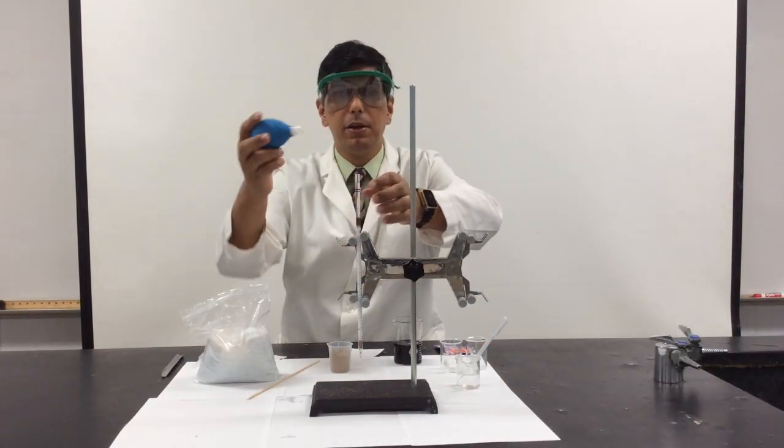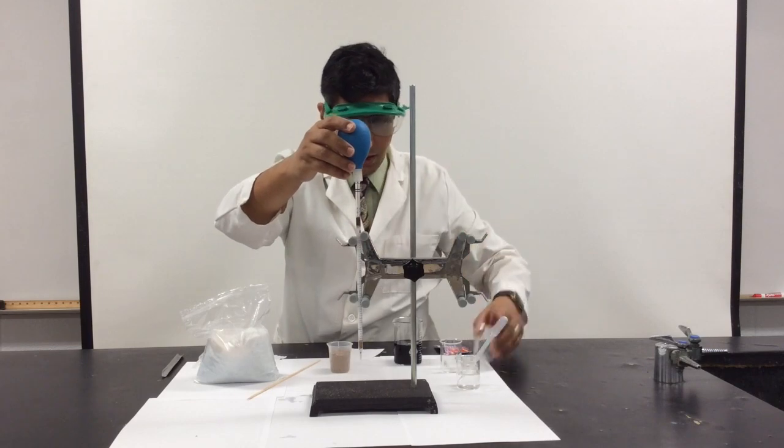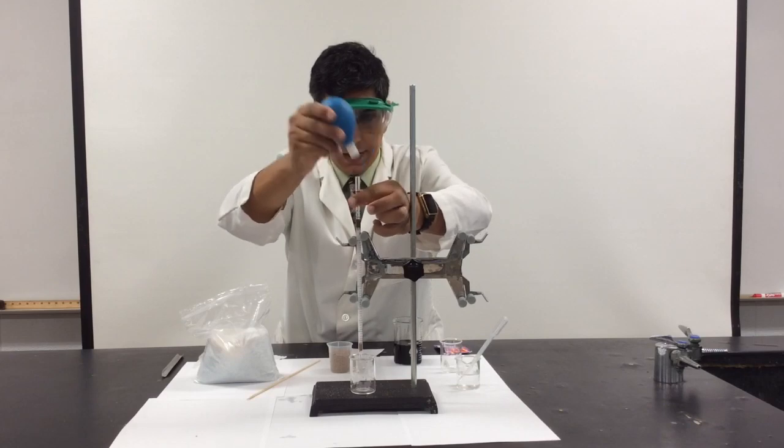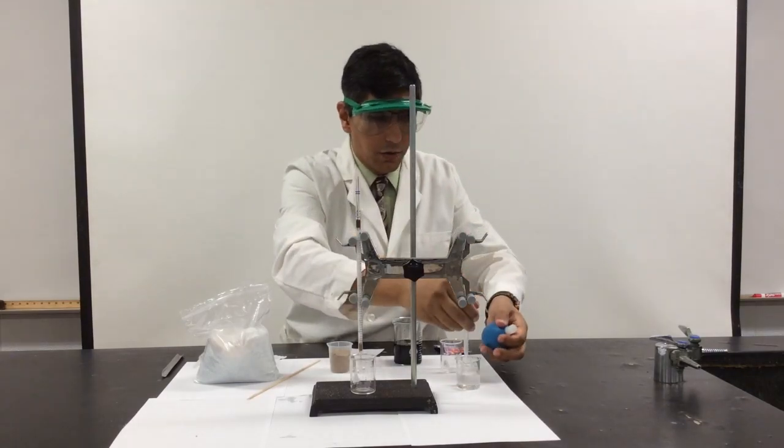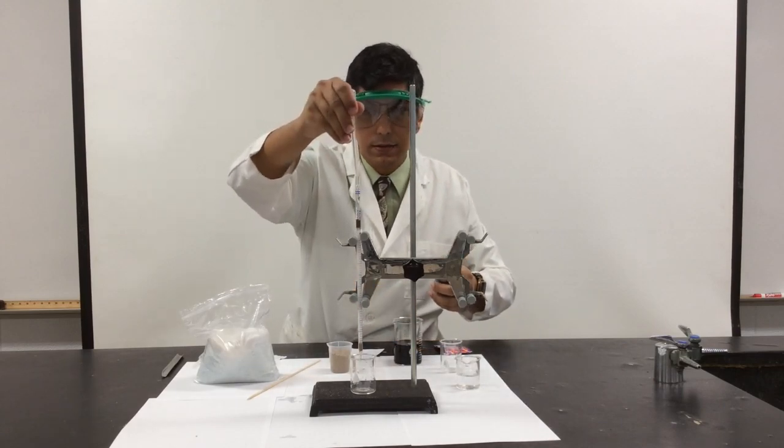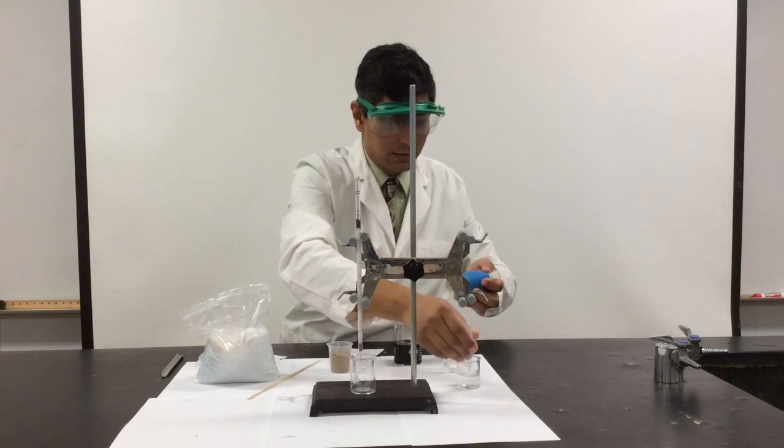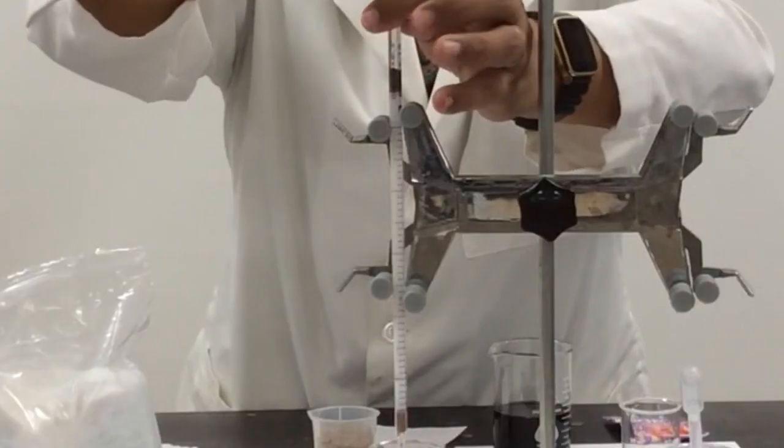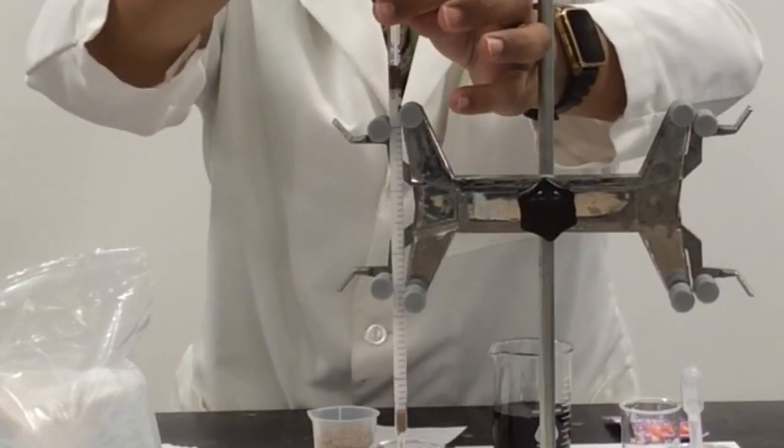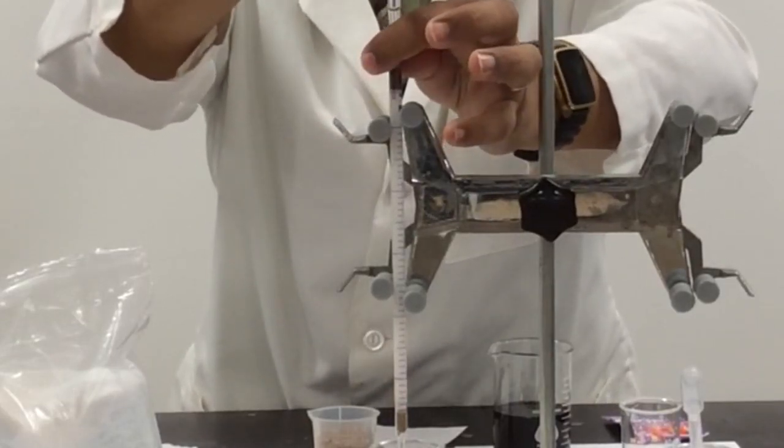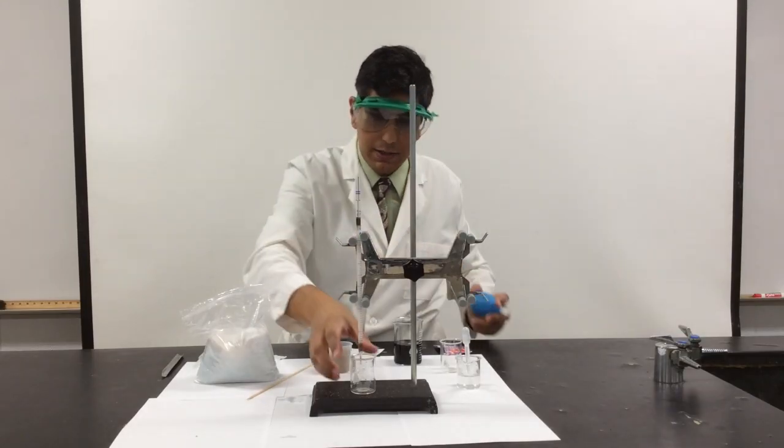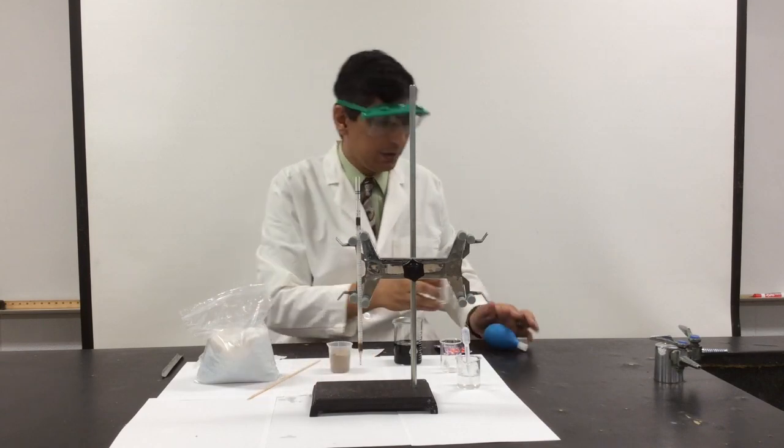So we're going to use this pipette bulb to help things along here. Basically pushing the water through the column to moisten it. And I know that the chromatography column is ready to use when I see a couple drops of water popping out the end of the column. And I see some water here, so that means that the column is ready to use.